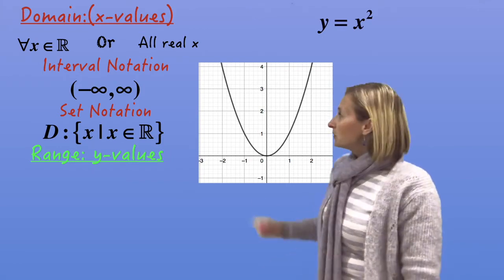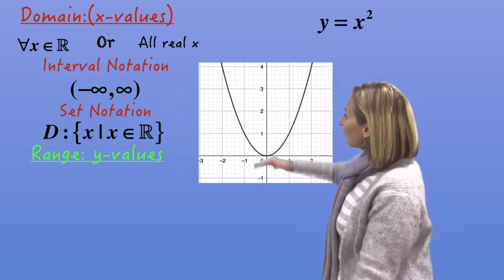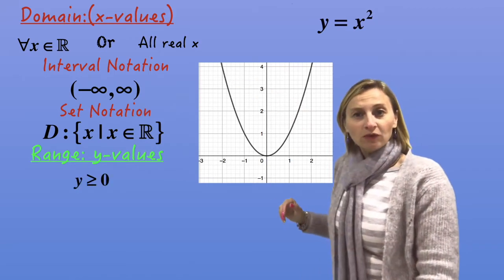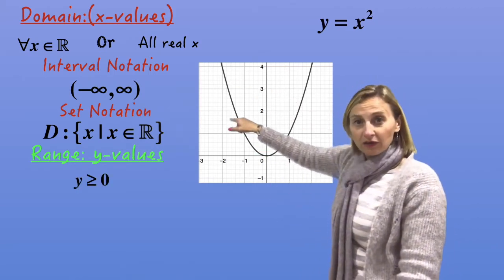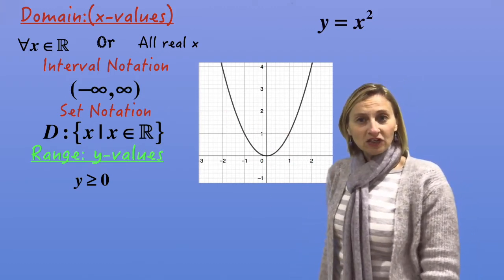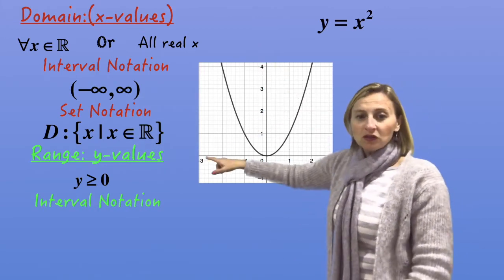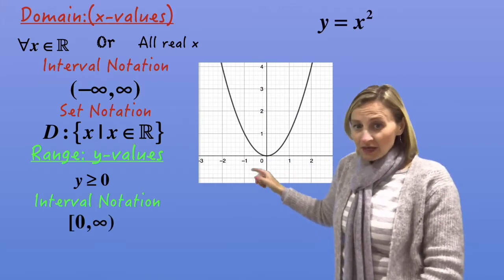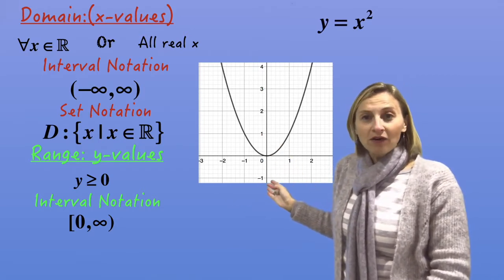Let's have a look at the range. What are the possible y values? Well, we've got any value of y that's bigger than zero, so that's y ≥ 0. Be careful, it can equal zero as well, because we can colour that dot in at the centre. How do we write that in interval notation? From zero to infinity. Can it equal zero? Yes. That means we put a square bracket on the left, and it can't equal infinity, so we put a round bracket on the right.